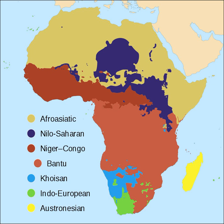Most languages spoken in Africa belong to one of three large language families: Afroasiatic, Nilo-Saharan and Niger-Congo. Another hundred belong to small families such as Ubangian and the various families called Khoisan, or the Indo-European and Austronesian language families mainly spoken outside Africa. The presence of the latter two dates to 2,600 and 1,500 years ago, respectively. In addition, the languages of Africa include several unclassified languages and sign languages.